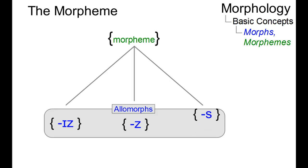Morphs, allomorphs and the morpheme itself are all represented within curly brackets. The label for the morpheme, which is an abstract head term, can freely be chosen.